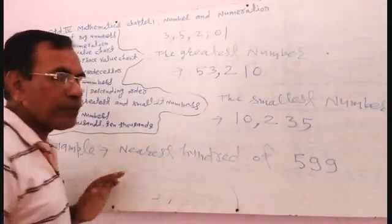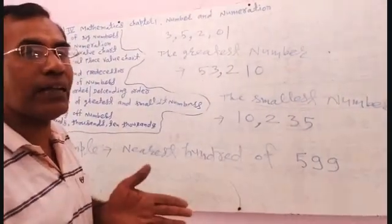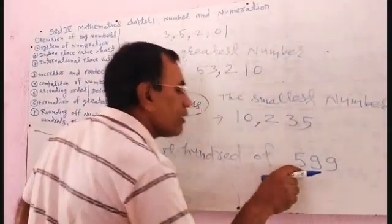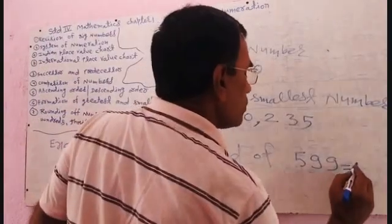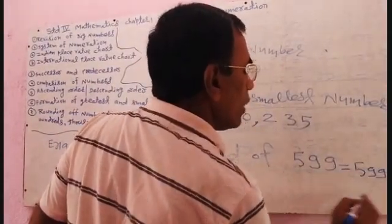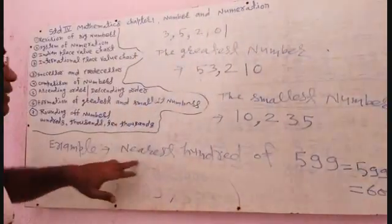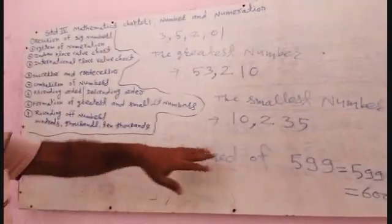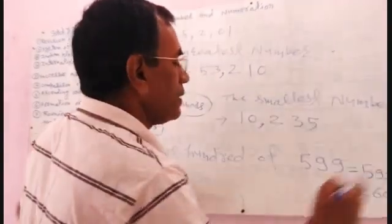If the tens digit is five or more than five, you add one to the hundreds. So 599 plus 1 equals 600. It is the nearest hundred of the given number. The nearest hundred of 599 is 600.